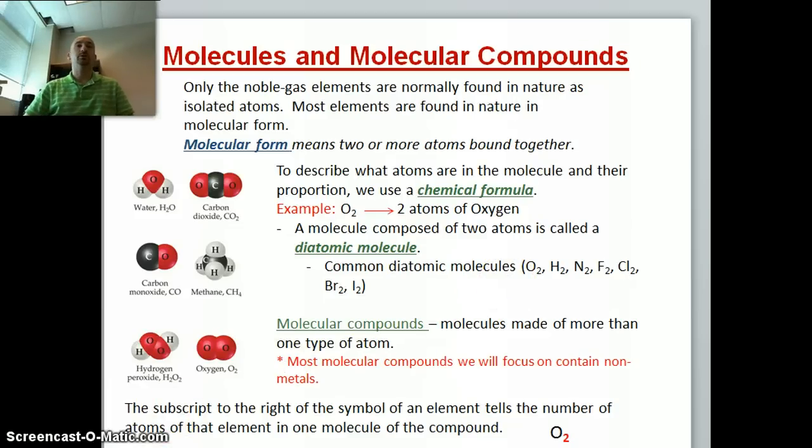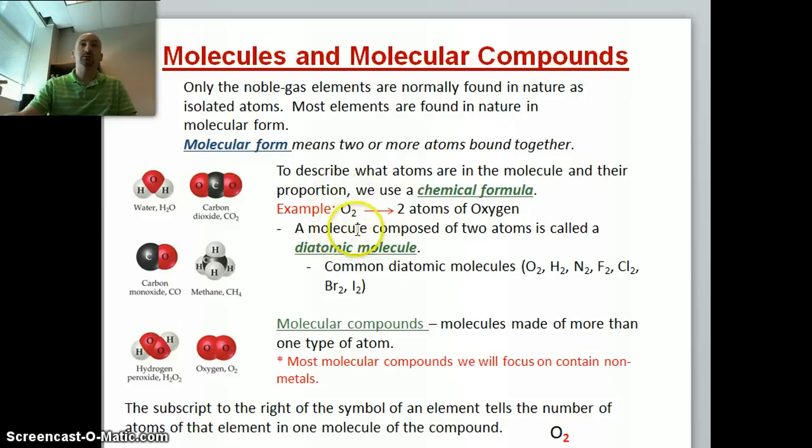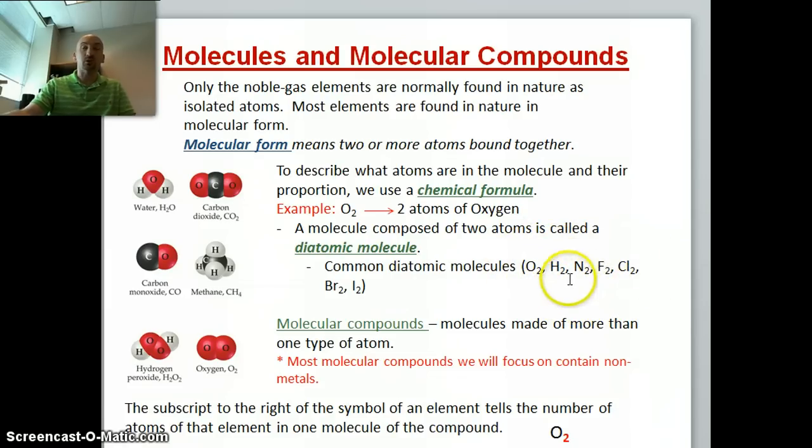Now we can turn our attention to molecules and molecular compounds. Most elements are found in nature in a molecular form, meaning they're composed of two or more atoms. A chemical formula describes what atoms are part of the molecule and how many atoms there are. For example, if we look at O2, it says that there's two atoms of oxygen. The diatomic molecules are molecules composed of two atoms, and these common diatomic molecules include things like O2, H2, N2, F2, Cl2, Br2, and I2. You should memorize these. You should know that these certain elements exist in diatomic molecules.